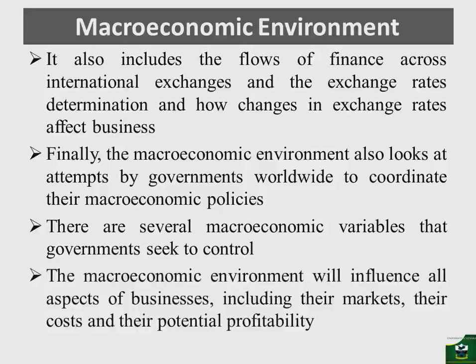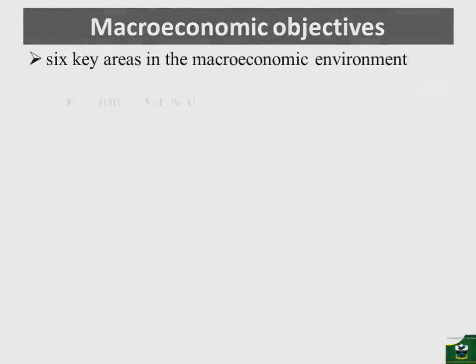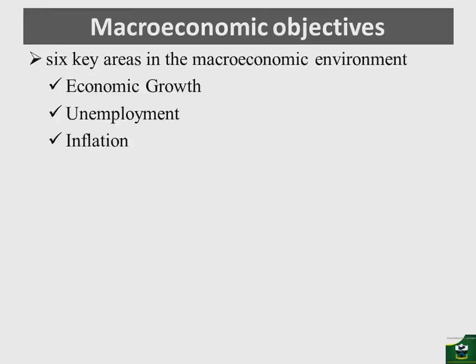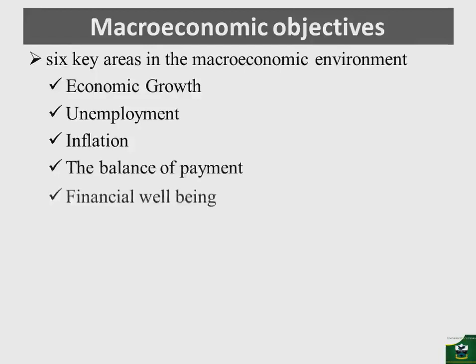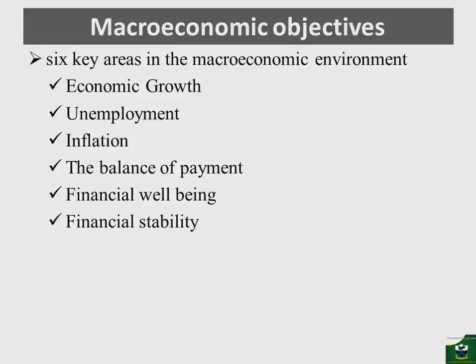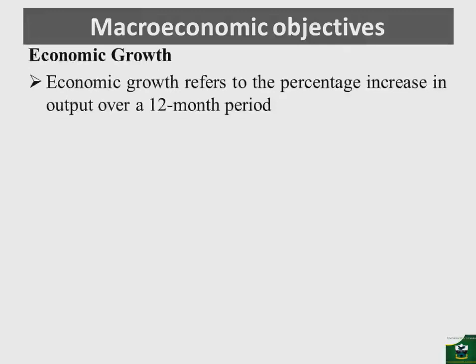There are six main elements that governments use to influence the macroeconomic environment. These areas include: the economic growth of a given nation, the levels of unemployment, the inflation rate, the balance of payments, the financial well-being of the nation, and financial stability. When discussing macroeconomic objectives, we will look at these objectives in line with these six key areas which influence the macroeconomic environment.